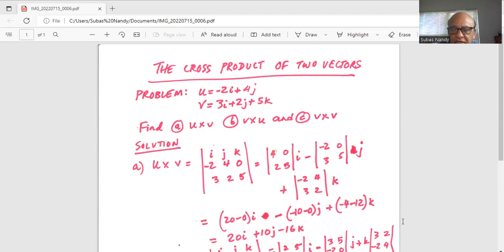And to get the coefficient of k, it is always positive, and then we eliminate the first row and the third column. So i, j, k, and k, 0, 5 are gone, so we are left with -2, 4, and 3, 2.